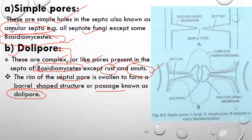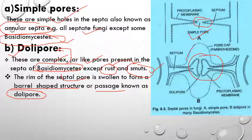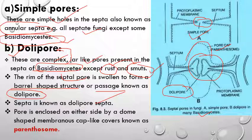The septa containing this pore is known as dolipore septa. In the picture we can see the simple annular pore and the barrel-shaped dolipore structure. This barrel-shaped special structure is covered by a membrane-like structure called the parenthesome or pore cap. This type of pore — the dolipore — is restricted to Basidiomycetes except rust and smut. The pore is enclosed on either side by dome-shaped membranous caps, and this dome-like structure is known as the parenthesome. This is very important.